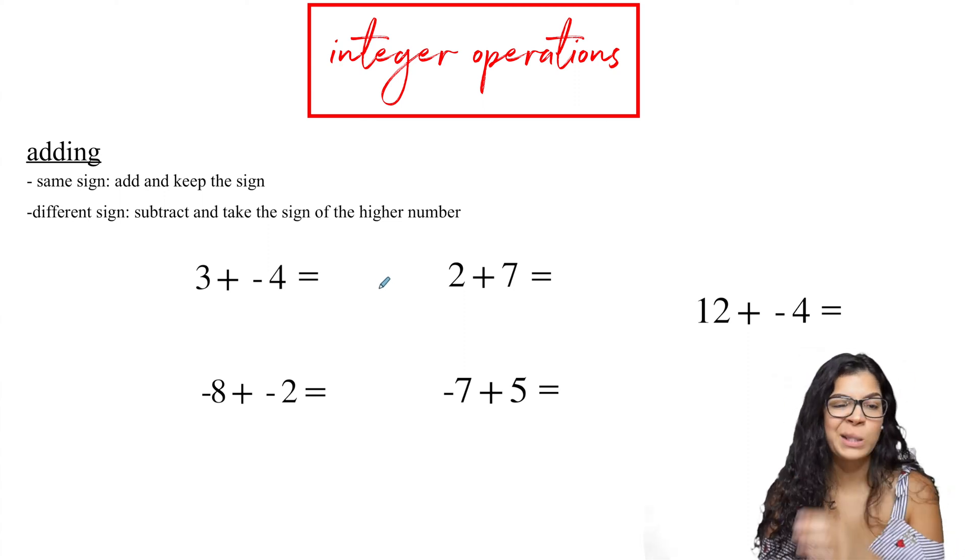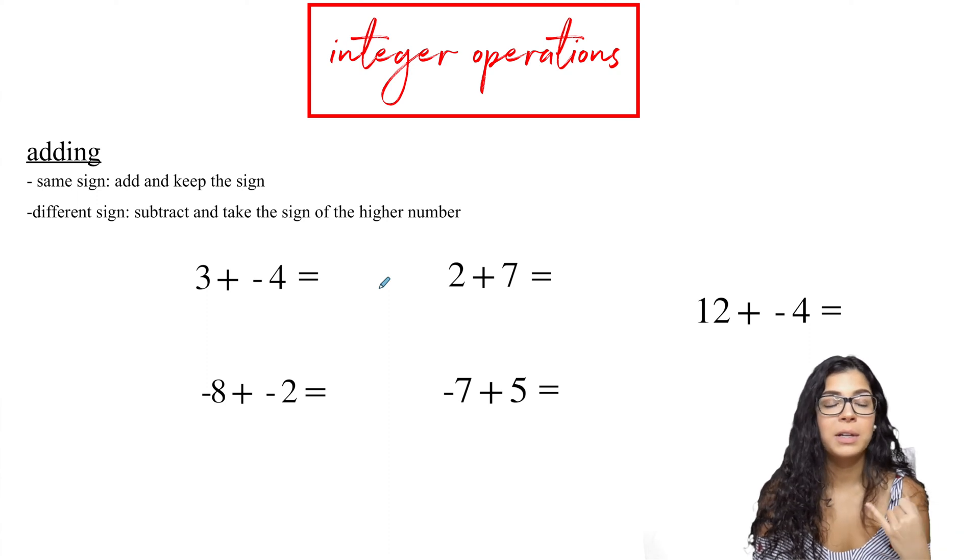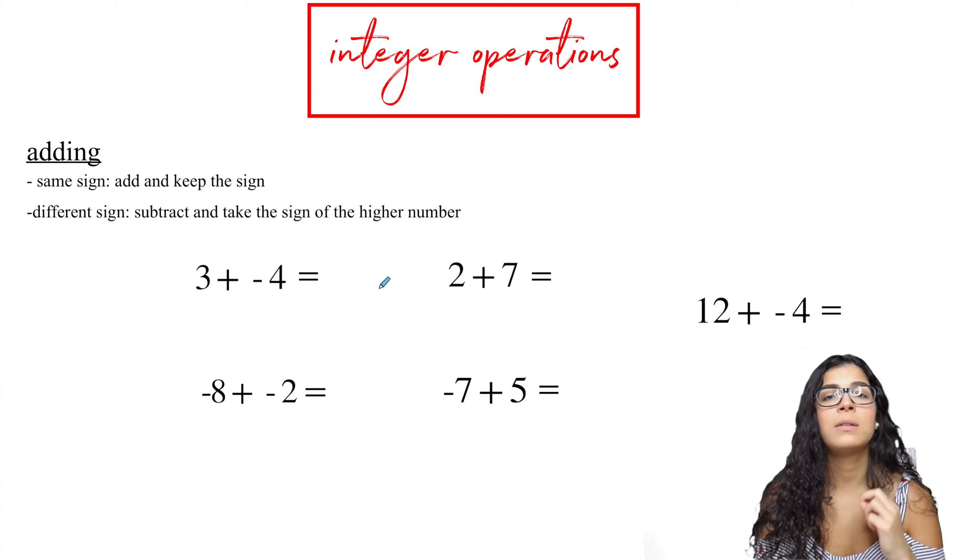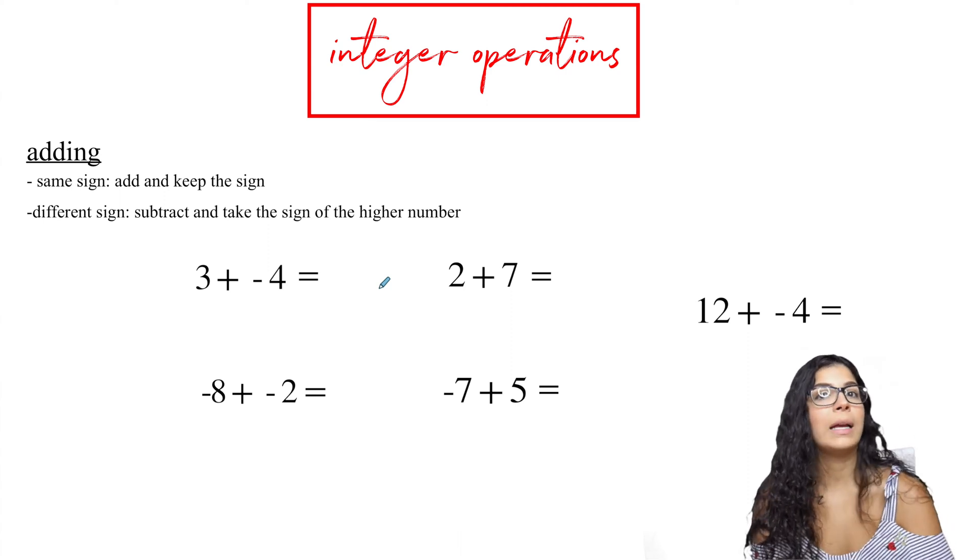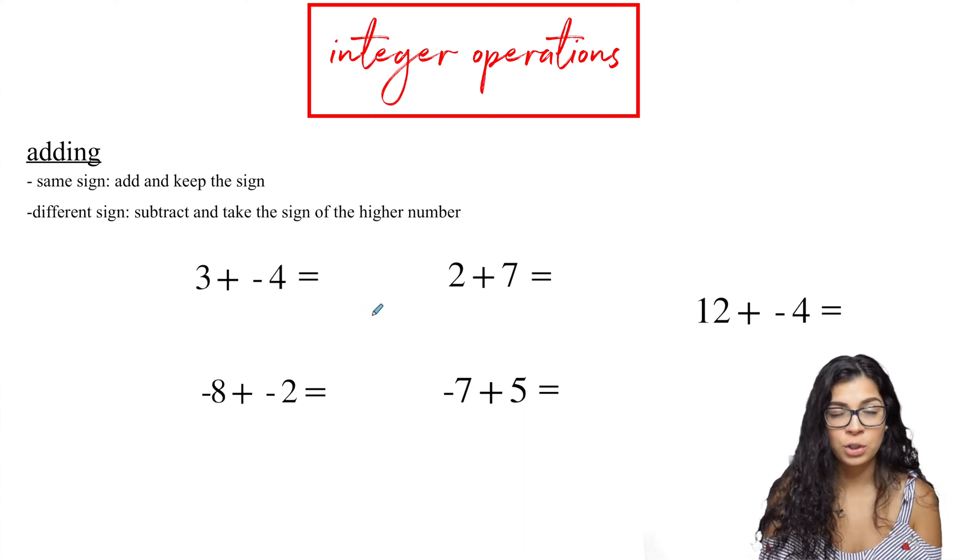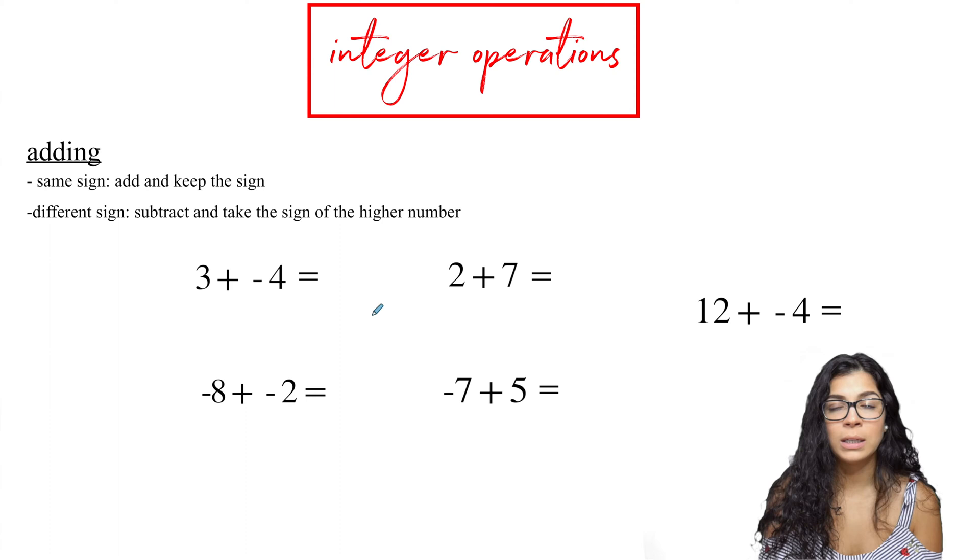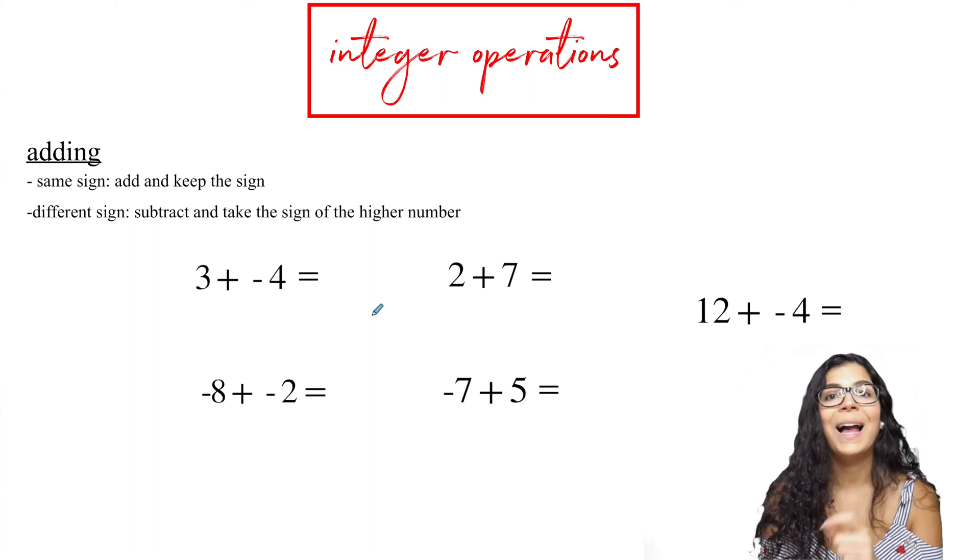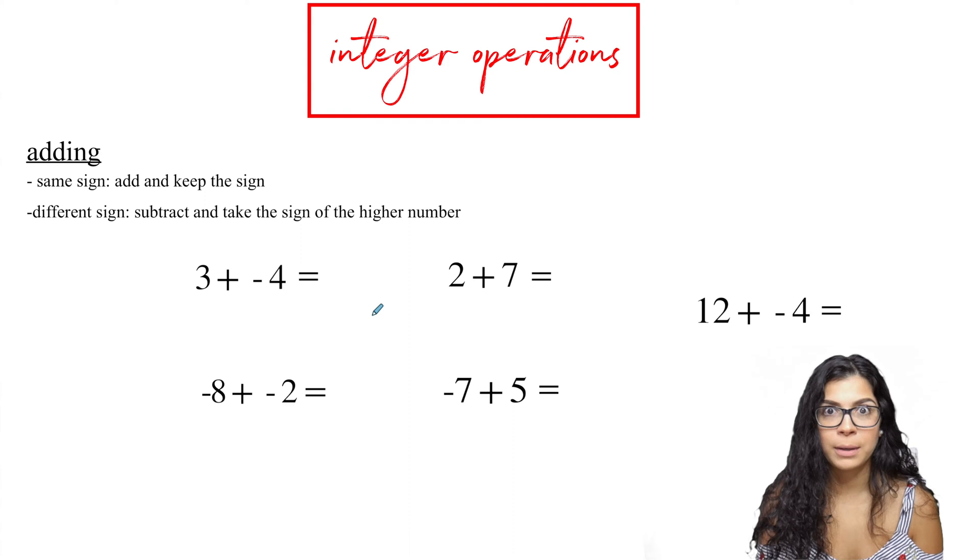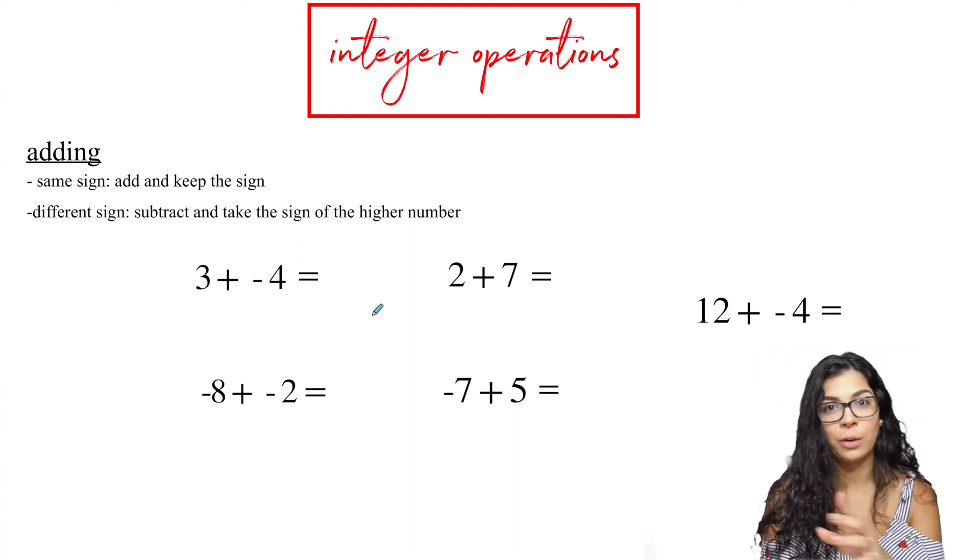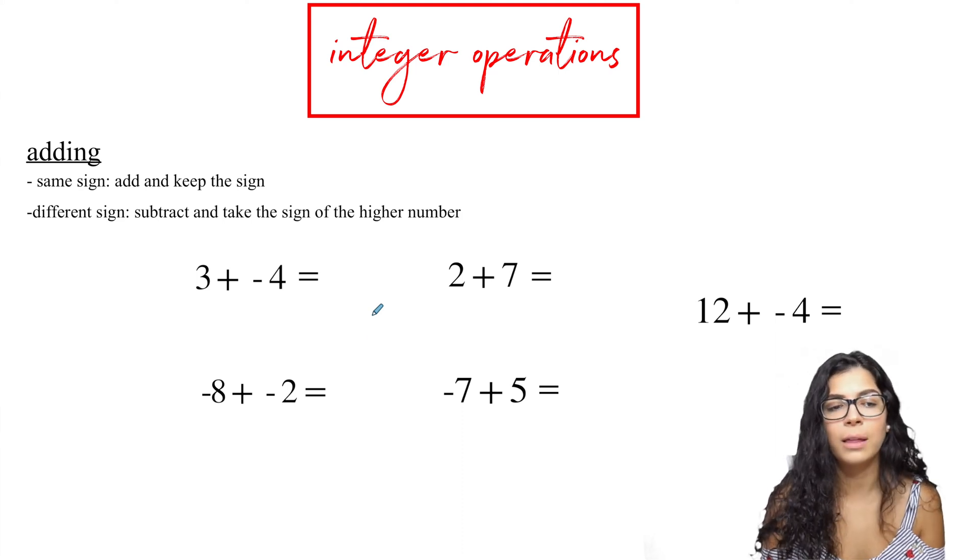So with adding, you have two different scenarios. You could either have the same sign or you could have different signs. So you could have two positives, two negatives, or different signs, a positive and a negative. The rules are: if you have the same sign, then you just add the numbers and keep the sign. And if you have different signs, you subtract the numbers and then you take the sign of the bigger number, the higher absolute value.